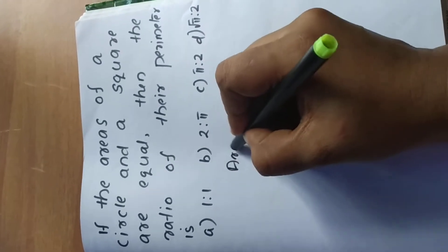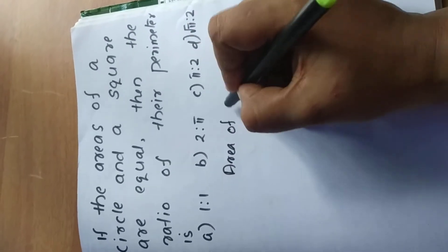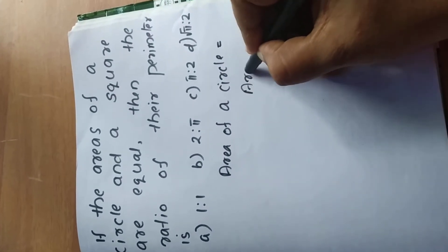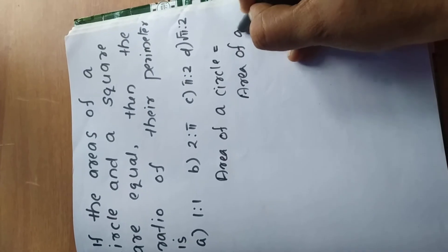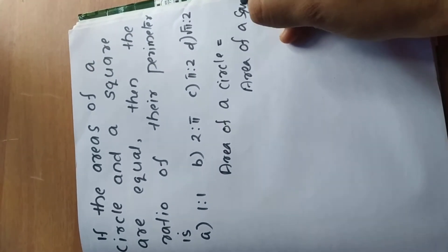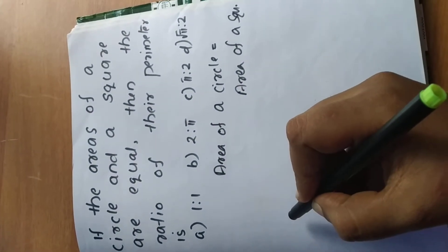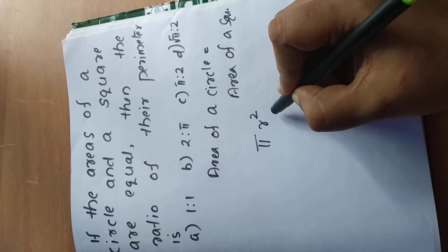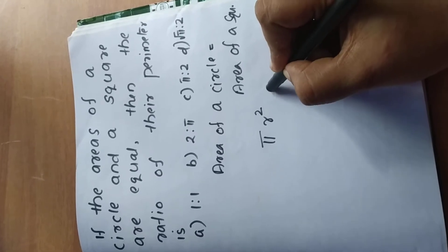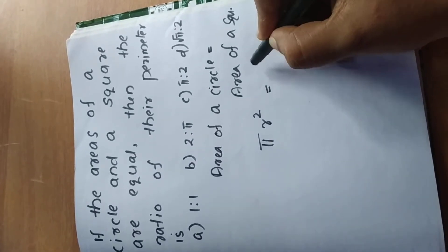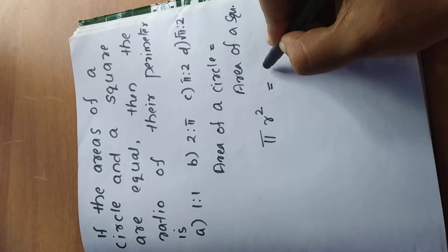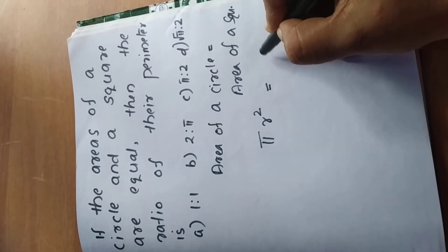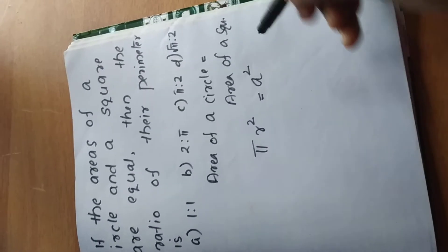We know that area of a circle is equal to area of a square. Area of a circle is π r², where r is the radius. Area of a square means side into side — taking the side as a, that is a².